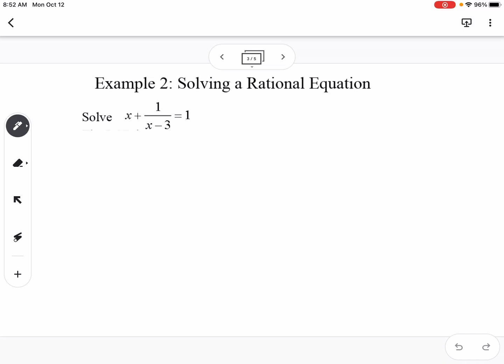So here's our first example. We're going to solve a rational equation. So we have x plus 1 over x minus 3 equals 1. So the first thing I need to do is I need to get a common denominator for everything. So that means I'm going to turn both of these into fractions and put them over 1. And then I look at the denominators and I see we have 1 and x minus 3. So that means our common denominator is x minus 3.